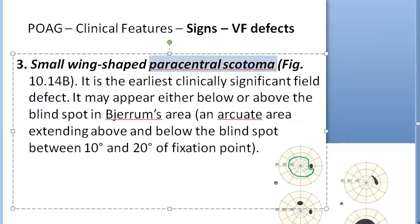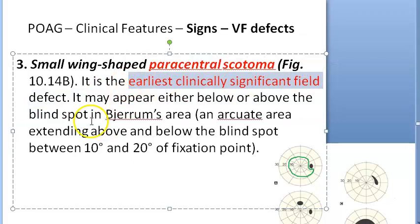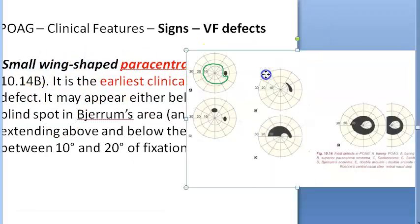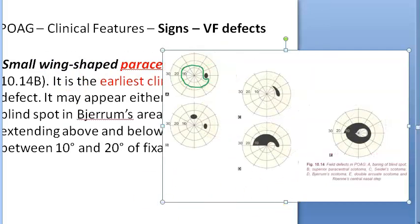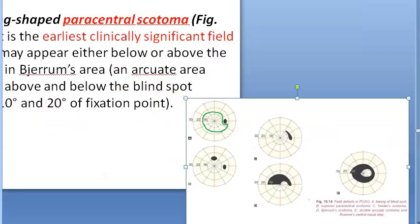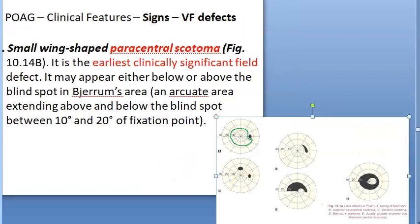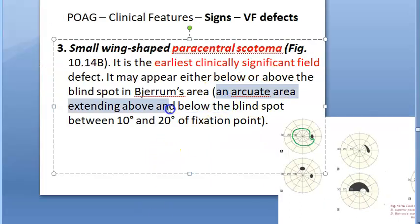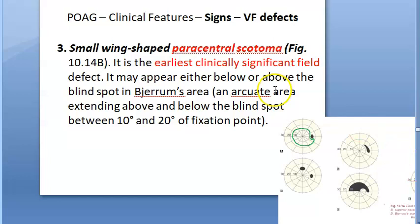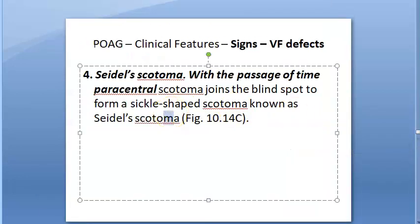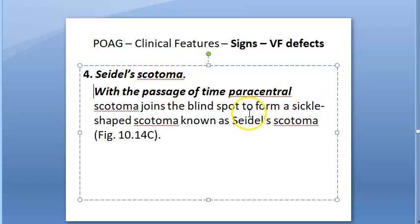Third: paracentral scotoma. This is the earliest clinically significant field effect — very important. It is a small, wing-shaped scotoma, shown here as a superior paracentral scotoma. Usually it appears on one side only — either superior or inferior. It may appear either below or above the blind spot, in the arcuate area extending above and below the blind spot, between 10 to 20 degrees from the fixation point.